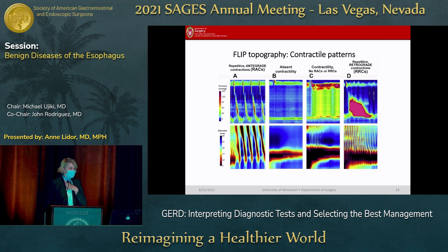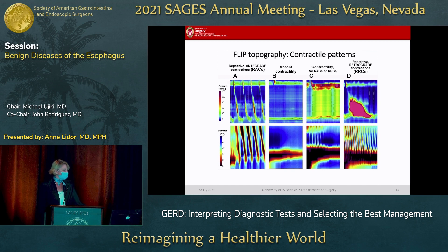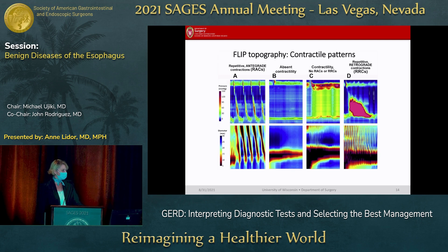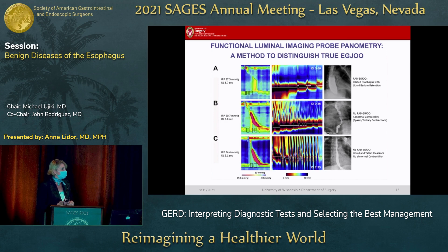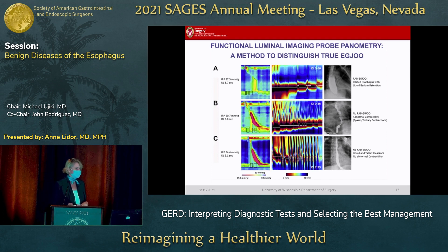Here are some examples of what EndoFlip looks like. Panel A shows someone with normal esophageal manometry on top and the corresponding flip imaging below. Panel B is someone with type 1A achalasia with no contractility — you can see their distensibility index is less than 2 and their EG junction is not relaxing. Panel C is similar, and panel D is someone with repetitive contractions showing retrograde imaging on the EndoFlip. These examples show how EndoFlip compares with manometry across different conditions.